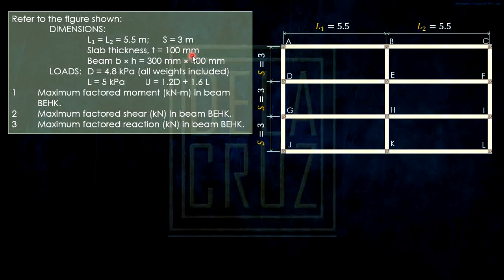Refer to the figure shown — this is the framing plan given, and we have the dimensions, the slab thickness, the beam dimension, and the loads. The loads are in terms of pressure: for dead load that is 4.8 kilopascals, for live load that is 5 kilopascals, and we have the load combination given.